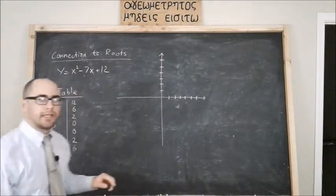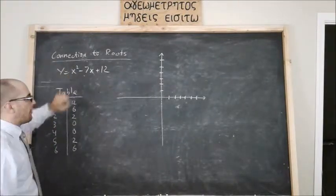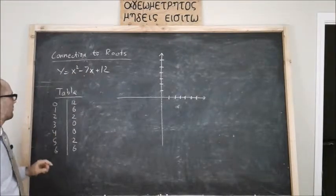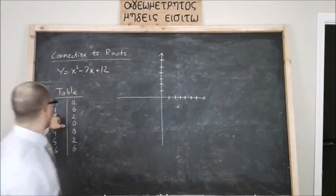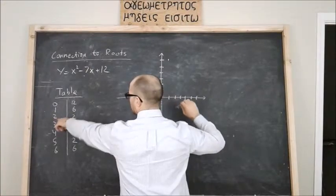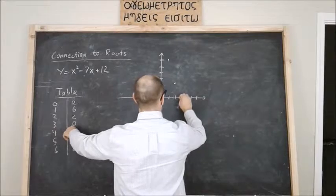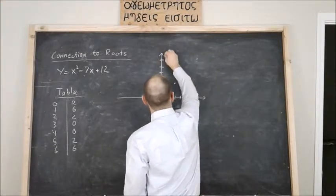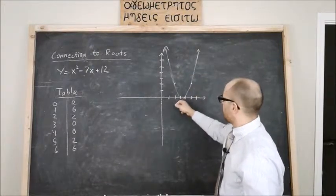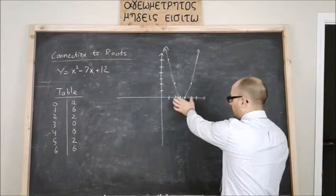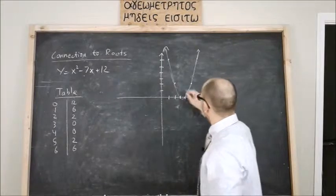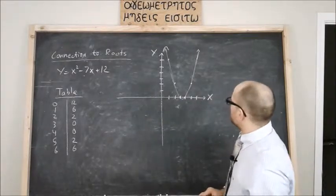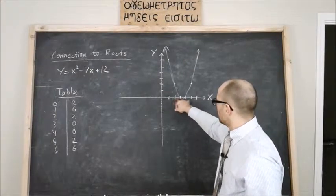One thing I forgot to mention earlier was the connection to the roots of a polynomial. So remember I had x² minus 7x plus 12. If I'm to plot these points again: over one up six, over two up two, over three up zero, four zero, over five up two, over six up six. So I mentioned we have our vertex at the very bottom, which by the way, if the parabola crosses the x-axis, the vertex is in between the two roots. So keep that in mind.